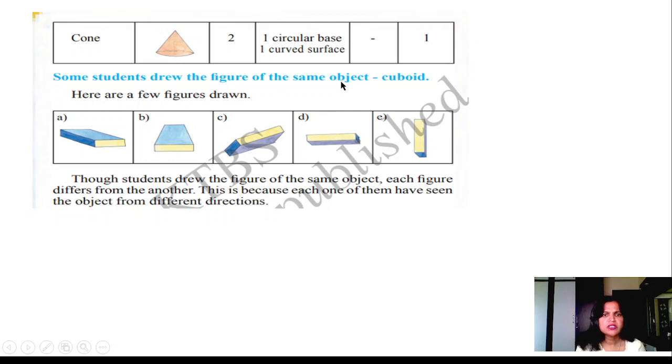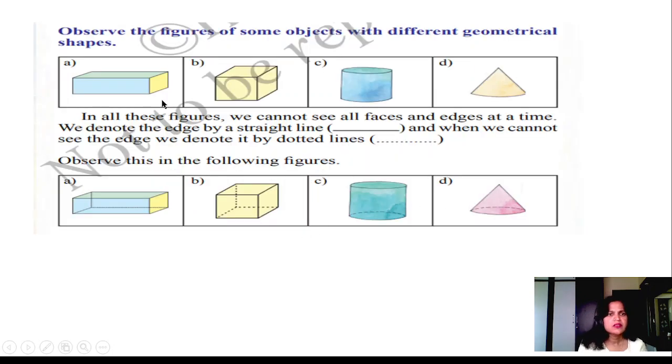Some students drew figures of the same object, cuboid, like this, in different angles. Though the students drew the figure of the same object, each figure differs from another. In all these figures, we can see all the faces and edges at a time. We note the edges by straight lines. And then the edges we cannot see, we denote by dotted lines.